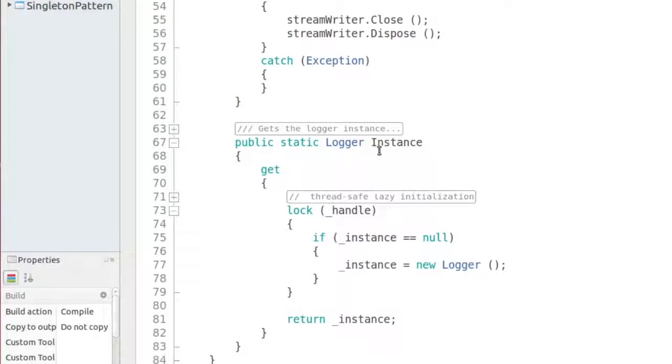And speaking of which, here is the instance property. You can see that it is a static property getter that uses a private field to store the single instance. If the instance field is null, the property first instantiates the logger and then returns it. If the field is not null, the property returns the instance right away.